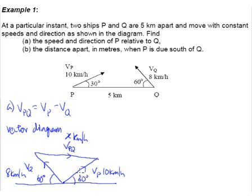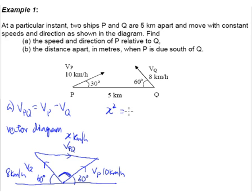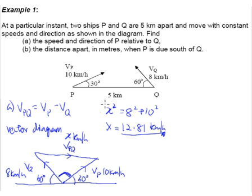This is a straight line, and if one angle is 60 degrees and another is 30 degrees, that makes the interior angle 90 degrees — so this is a right-angle triangle. To find x, we can simply use Pythagoras' theorem: x² = 8² + 10². From your calculator, you will get x = 12.81 kilometers per hour. So this will be the first part of our answer — the speed of P relative to Q.